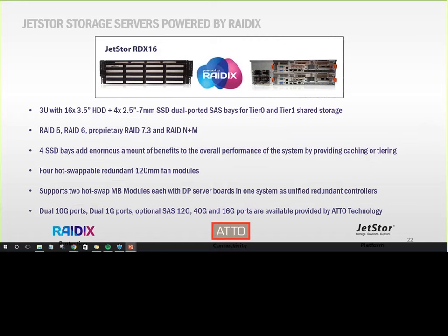Our first appliance powered by Radix is called RDX16 — a 3U appliance with 16 3.5-inch drives and four 2.5-inch SSD drives for caching. It supports RAID 5, RAID 6, proprietary RAID 7.3, and RAID N plus M. We have four SSD bays for caching and tiering, four redundant power supplies and fan modules, Hotswap modules, and motherboards with redundant or single nodes. We offer dual 10-gigabit ports, dual 1-gigabit ports, dual 40-gigabit ports as QSFP, optional 12-gigabit SAS, and support for 16 and 32-gigabit fiber channel ports provided by Addo.